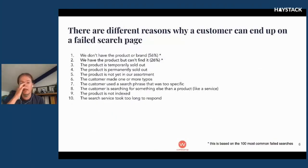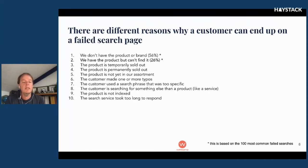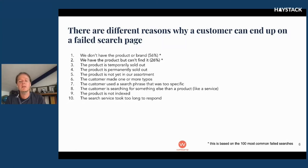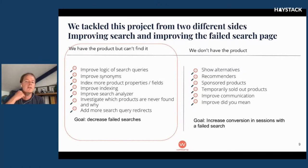How did we approach it? Well, first we sat down and looked at what could be the reason that customers end up on this page. For instance, it could be that we don't have the product or the brand. It could be that we have the product but we cannot find it, or the product is sold out, or it's not released yet — like the newest iPhone, people are already searching for it but nobody has it in stock yet. We saw that the most common reason was that we don't have the product or the brand, and after that we have the product but we cannot find it. So this was the main focus of our project. We tackled this project from two different sides: improving the search and improving the failed search page.